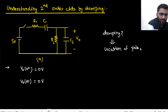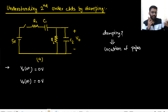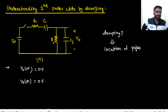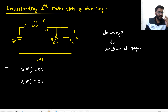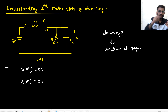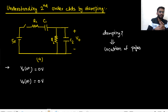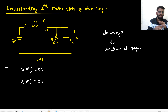In under-damped, there are oscillations but they will die out. In over-damped, it will be a slow response with no oscillations. In critically damped, there is no oscillation and it will be a faster response. In over-damped as well there are no oscillations but a slower response. This all we have studied in RLC circuit and LC circuit. So now I have to find the location of poles.